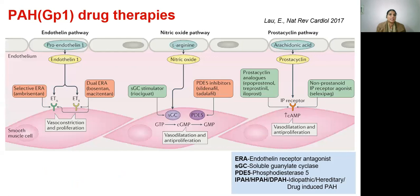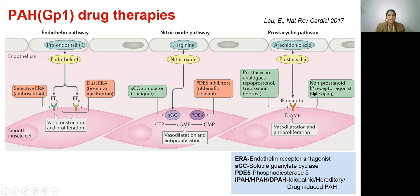PAH drugs act mainly on three pathways. The endothelin pathway is over-expressed in pulmonary arterial hypertension, leading to vasoconstriction and proliferation. This pathway can be blocked by endothelin receptor antagonists — the selective ERA is ambrisentan, and dual ERAs are bosentan and macitentan. Drugs acting on the nitric oxide pathway are the soluble guanylate cyclase stimulator riociguat, or PDE5 inhibitors sildenafil and tadalafil. Drugs acting on the prostacycline pathway are prostacycline analogues: epoprostenol, treprostinil, iloprost, or the oral drug selexipag.